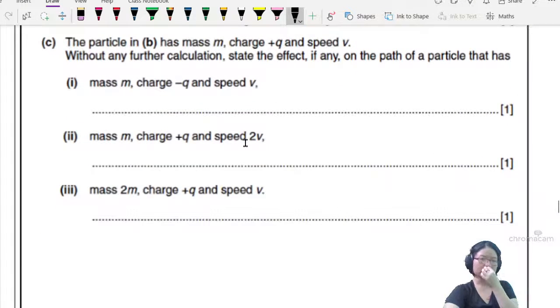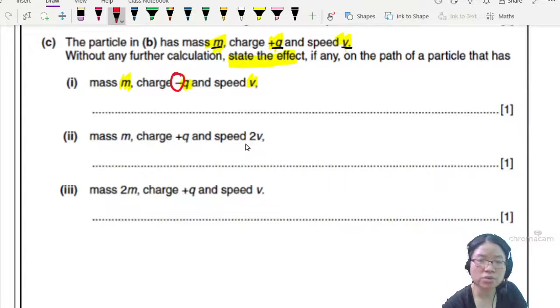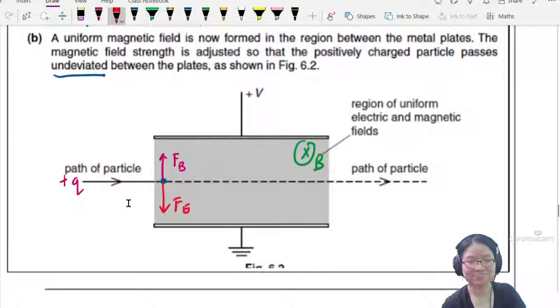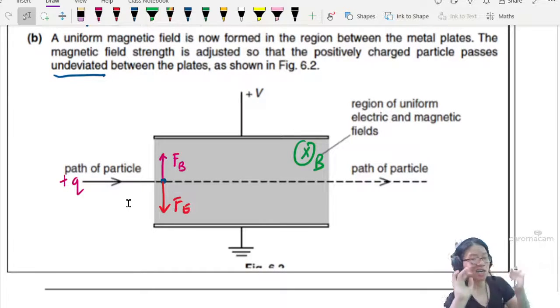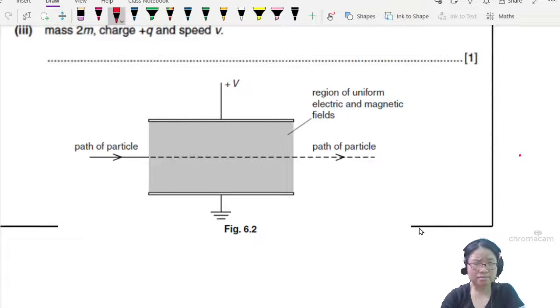Part C: The particle in B has mass m, charge positive q, and speed v. Without any further calculation, state the effect, if any, on the path of the particle that has the same mass, same magnitude of charge, same speed. The only difference here is the polarity, this is a negative charge. If I replace this with a negative charge, do you think anything will change? Let's rework the whole scenario, but replacing this particle with negative q. I have copy-pasted the same diagram. We're going to replace this with negative q.